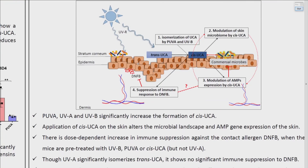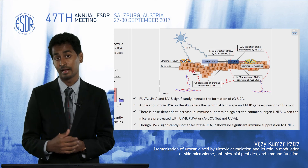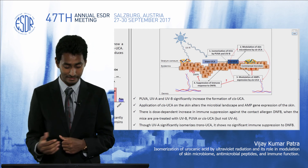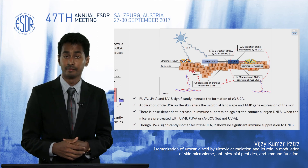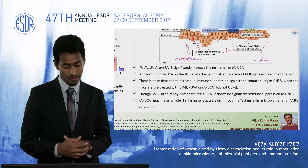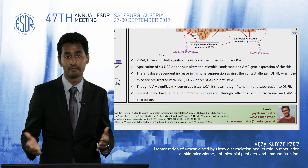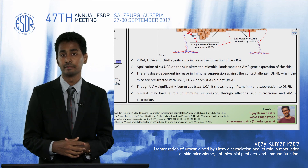To conclude: PUVA, UVA, and UVB significantly increase the formation of cis-urocanic acid. Application of cis-urocanic acid alters the microbial landscape and AMP gene expression both at eight hours and 24 hours. There is also a dose-dependent increase in immune suppression against contact allergens such as DNFB when mice are pretreated with UVB, PUVA, or cis-UCA, but not UVA alone. Overall, cis-urocanic acid may have an important role in immune suppression by affecting the skin microbiome as well as antimicrobial peptide expression.